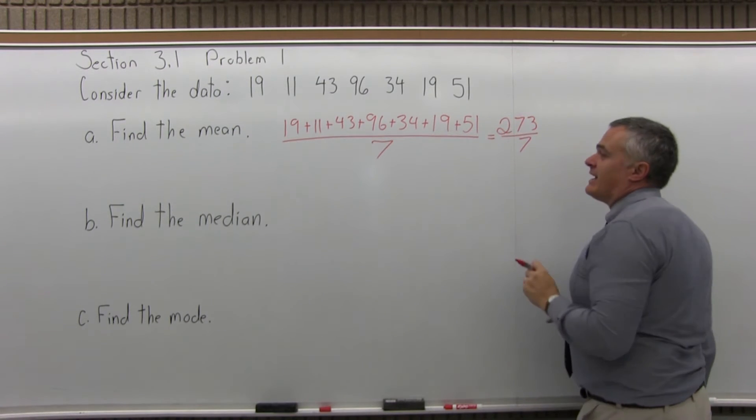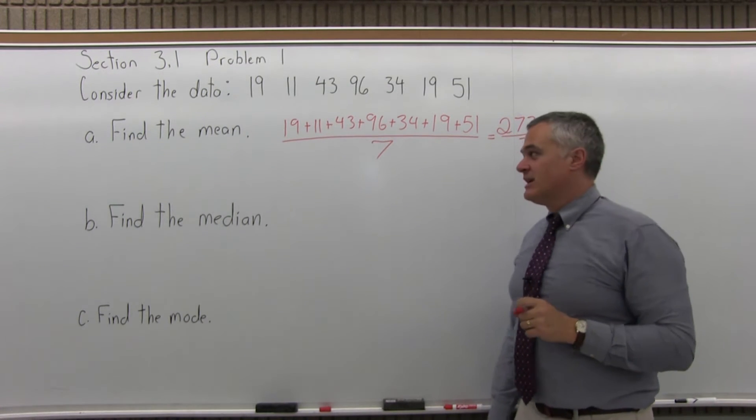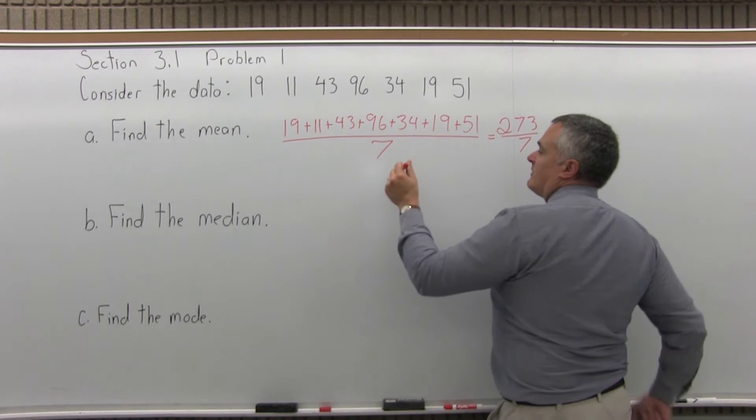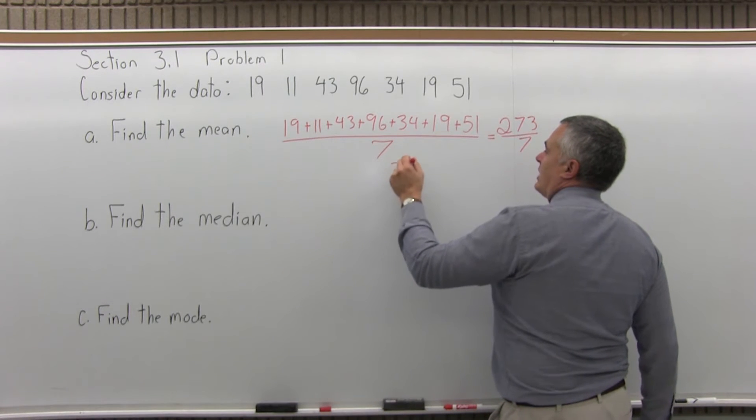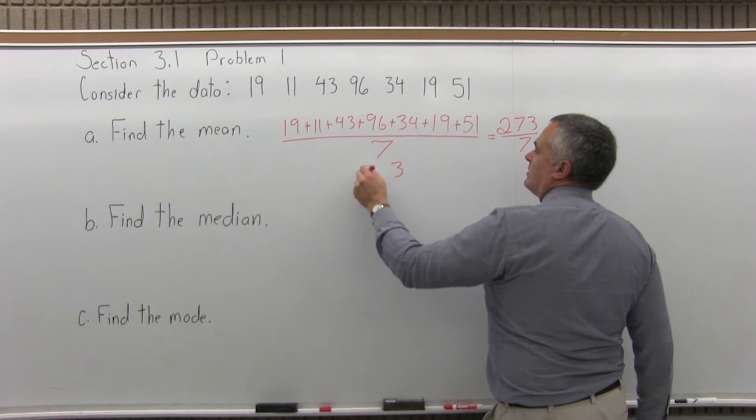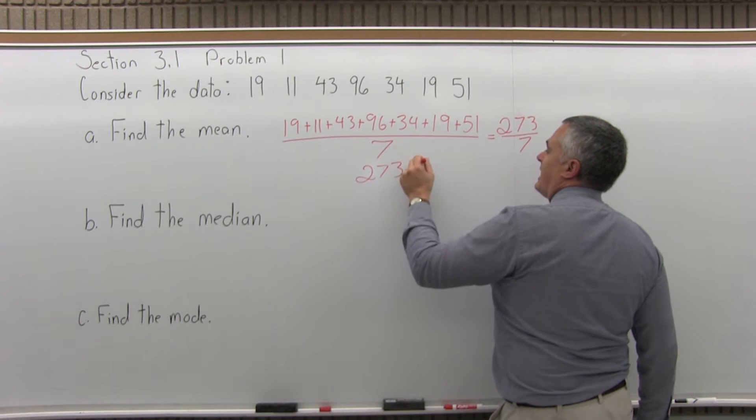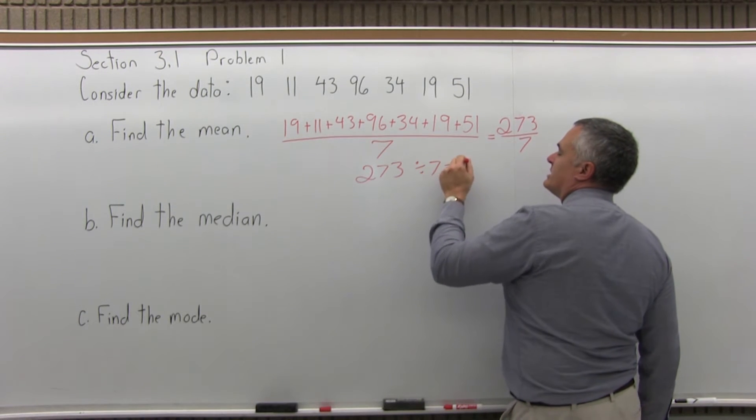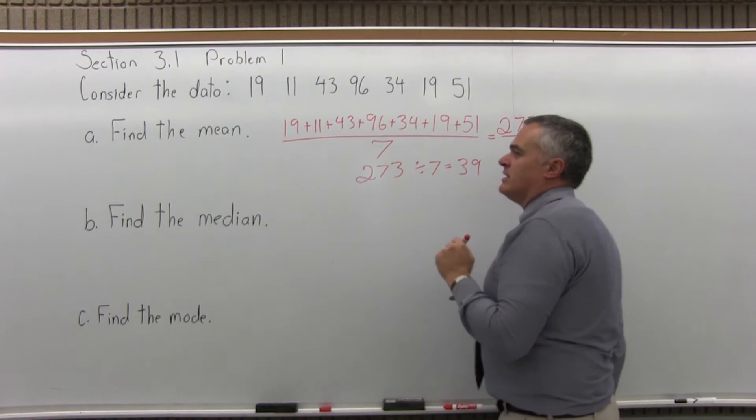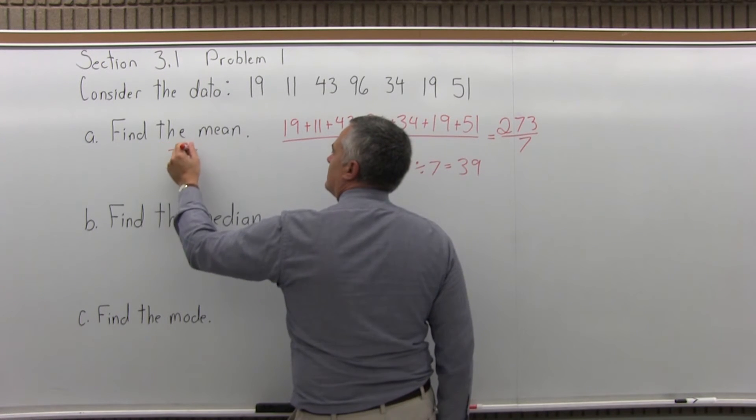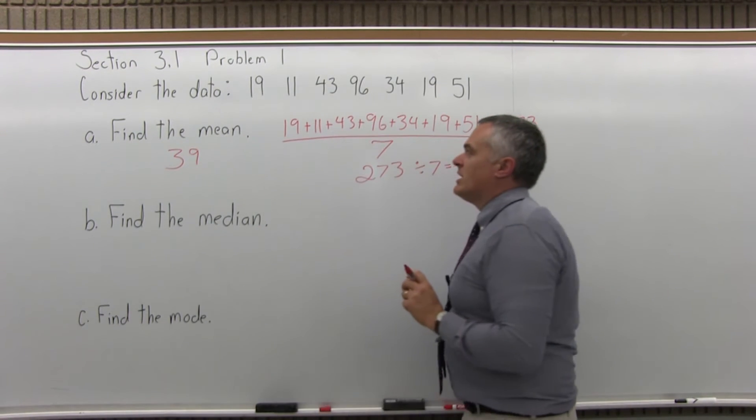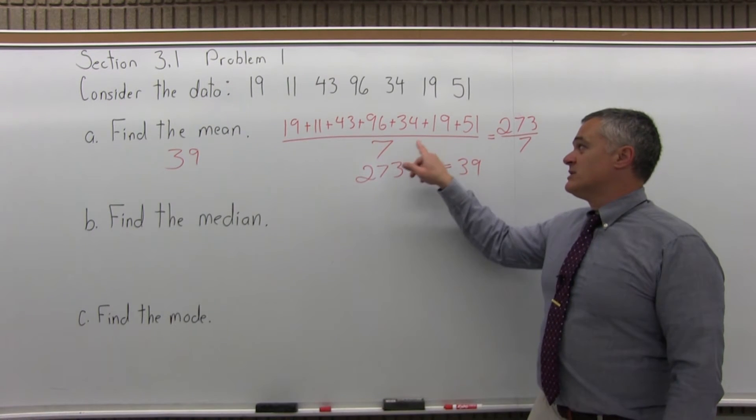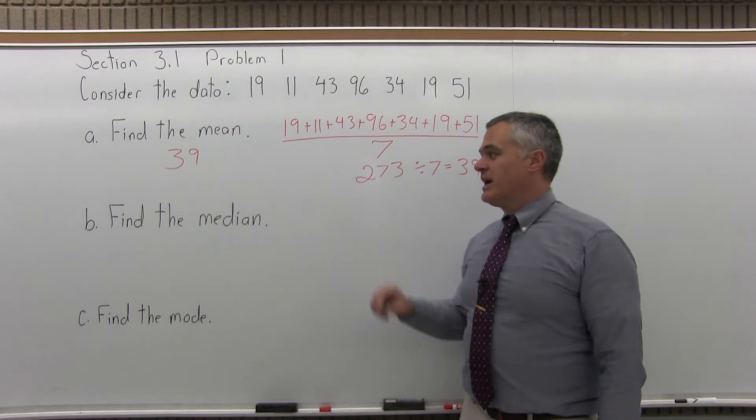And we will divide that by 7, again, because there are 7 data values. That's not something that divides easily without a calculator. So you would go 273 divide by 7 equals, and a calculator would tell you right away that it's 39. So the mean is 39. And again, we got that by adding all the data values and dividing by how many data values we had.